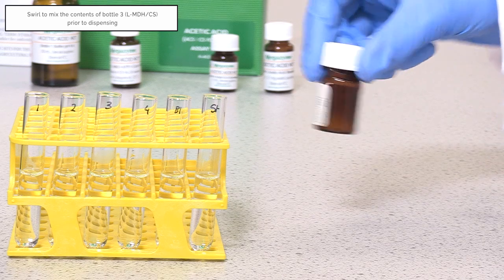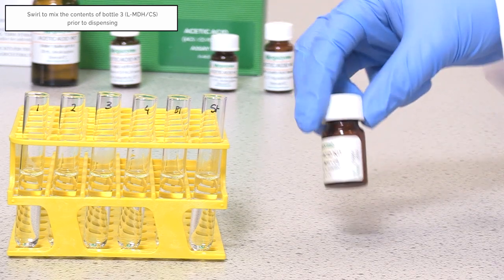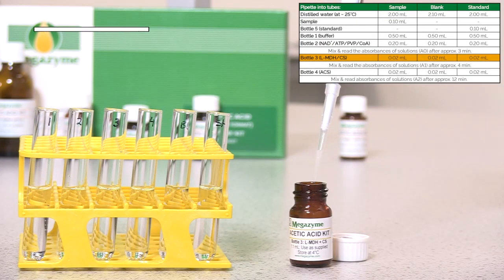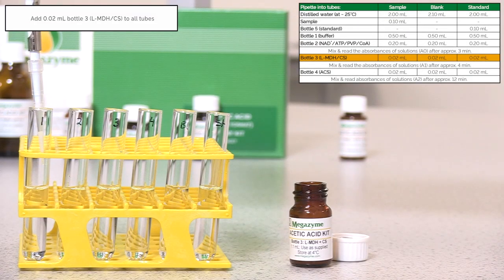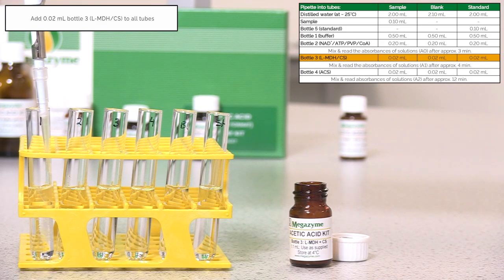Swirl to mix the contents of bottle 3, L-malate dehydrogenase and citrate synthase, prior to dispensing. After recording the A0 absorbance value, pipette 20 µL of bottle 3 into all assay tubes.